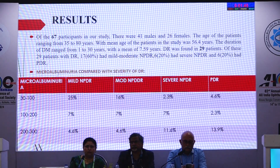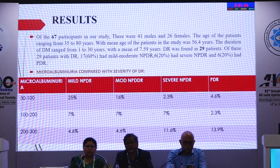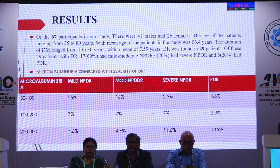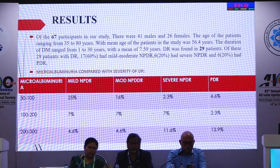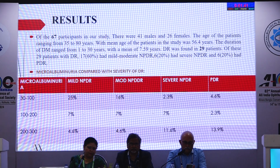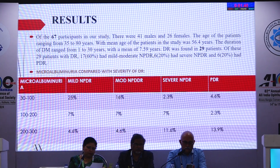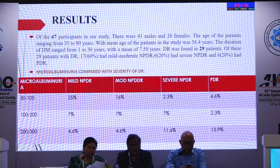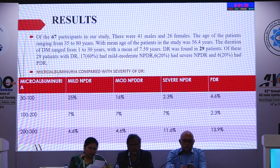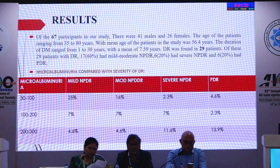Diabetic retinopathy was found in 29 patients. Of these 29, 17 had mild to moderate NPDR, 6 had severe NPDR, and 6 had proliferative diabetic retinopathy. This table shows microalbuminuria compared with the severity of diabetic retinopathy.